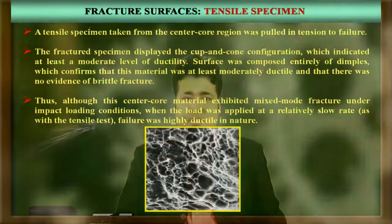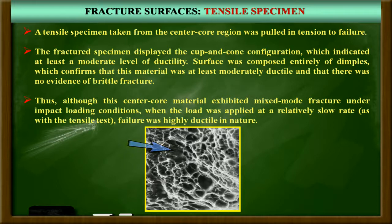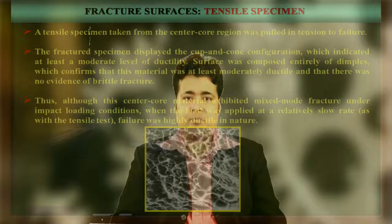Now, to confirm further, we go for a tensile test sample, which represents a slower strain rate. We see the fractured surface of the center and core region of the shaft is very much ductile — the surface is full of dimples and there are lots of cup-like features of plastic deformation, with no significant amount of flat surfaces. So it is comparatively a ductile mode of fracture when tested under a slower strain rate.